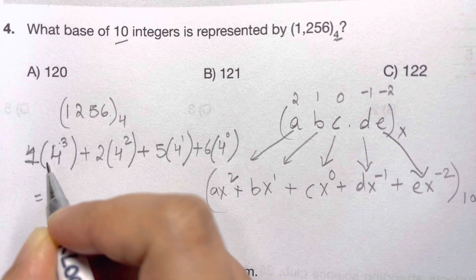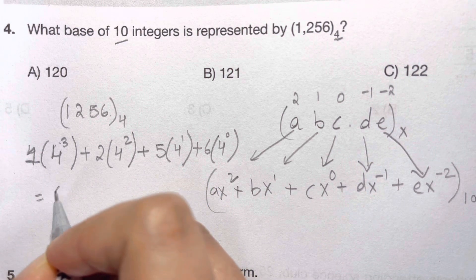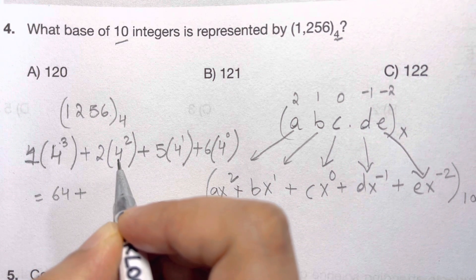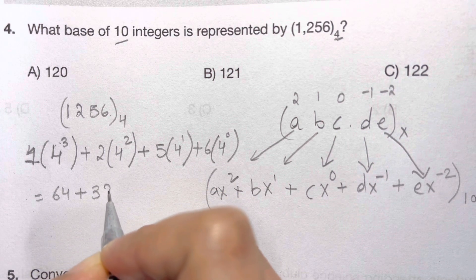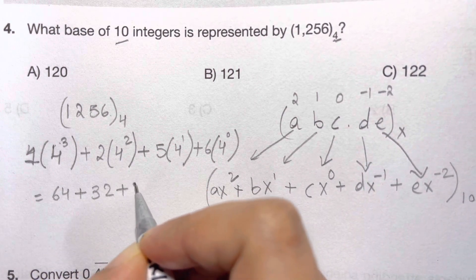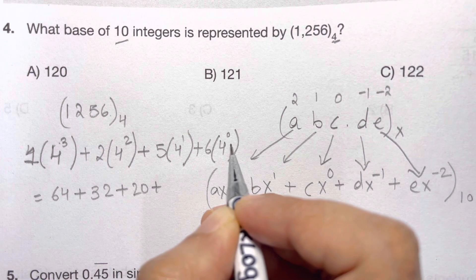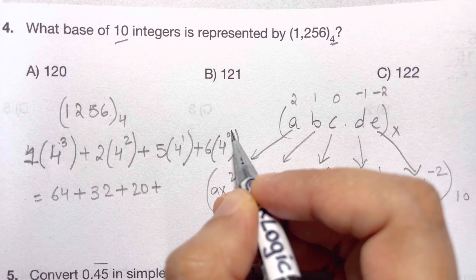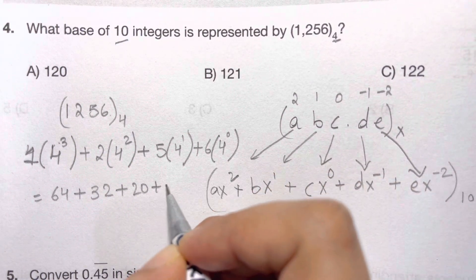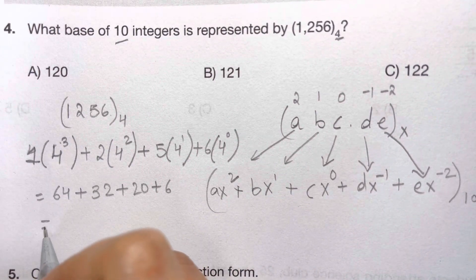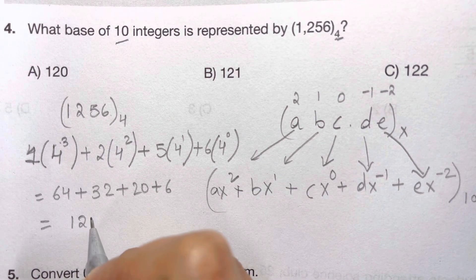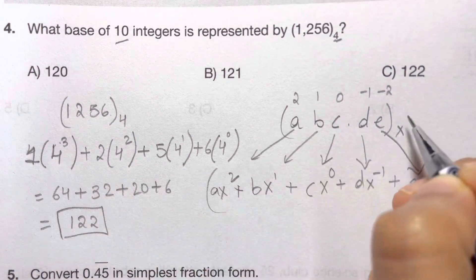Now let's calculate. 4 cubed times 1 is 64 plus 16 times 2 is 32 plus 5 times 4 is 20 plus 6 times 4 to the power of 0 is 1, so 6 times 1 is 6. This is equal to 122. So that's your answer choice.